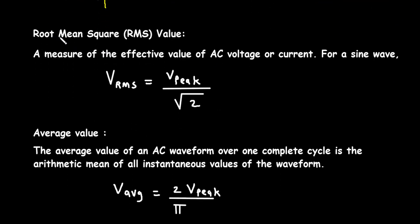Next is root mean square, or RMS value. A measure of the effective value of AC voltage or current is called the RMS value. For a sine wave, Vrms — the RMS value of voltage — is equal to the maximum or peak value of voltage divided by root 2.